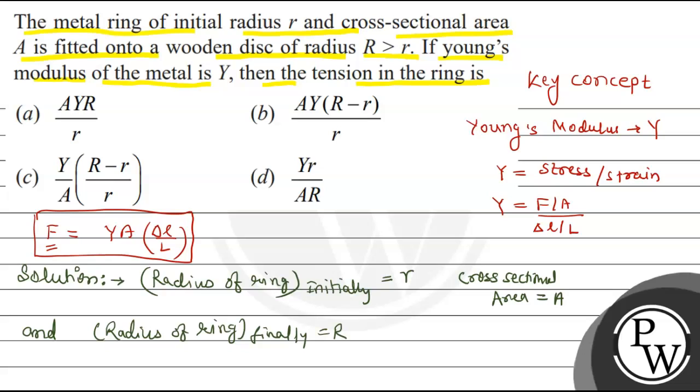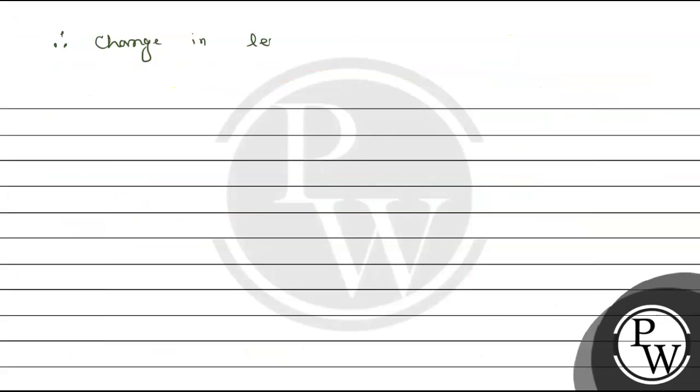So here L initial is 2πr and L final equals 2πR. Change in length equals 2πR minus 2πr. Taking 2π common, we get R minus r. Therefore strain is equal to del L by L equals (R-r) upon r.